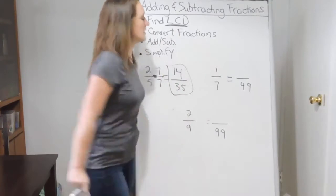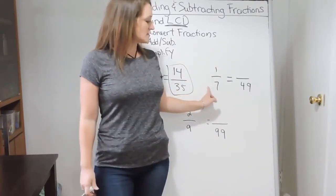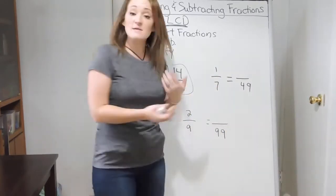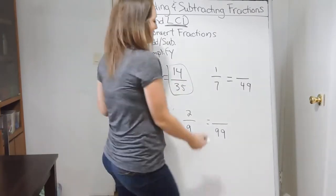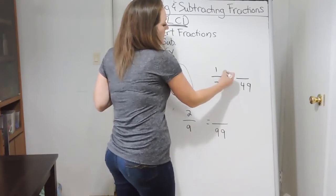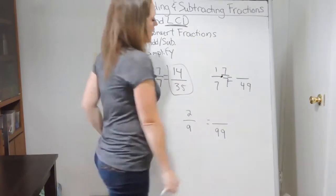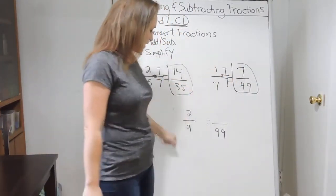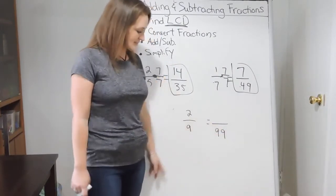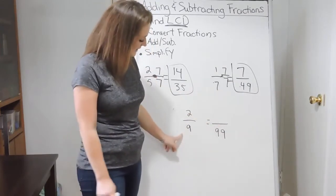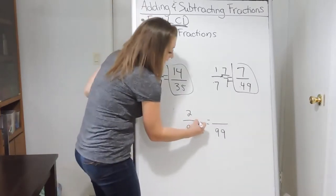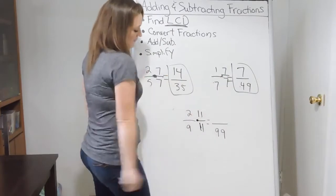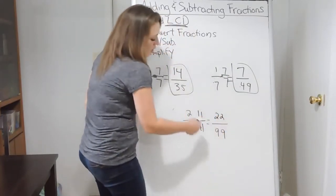Next example: we have 1 over 7, and we want to convert it to have a denominator of 49. Think: 7 times what is 49? 7 times 7 is 49, so we multiply by 7 over 7. That gives us 1 times 7 = 7 over 7 times 7 = 49, so the converted fraction is 7/49. For the next example, we have 2 over 9 and want a denominator of 99. 9 times 11 is 99, so we multiply by 11 over 11: 2 times 11 = 22 over 99.